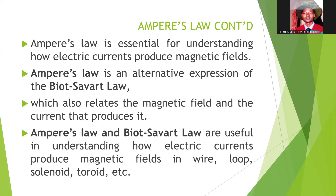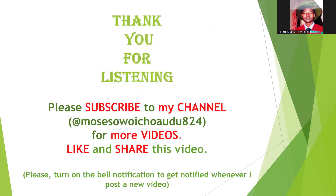Ampere's law is essential for understanding how electric current produces a magnetic field, and it is an alternative expression of Biot-Savart law, which also relates the magnetic field to the current that produces it. Generally, Ampere's law and Biot-Savart law are useful in understanding how electric currents produce magnetic fields in wires of whatever shape — in loops, solenoids, toroids, and other current carrying conductors.